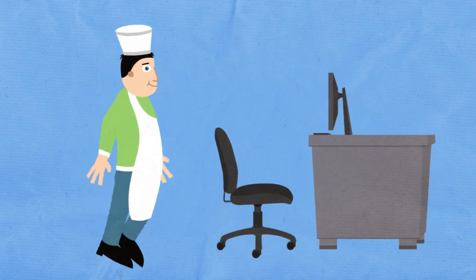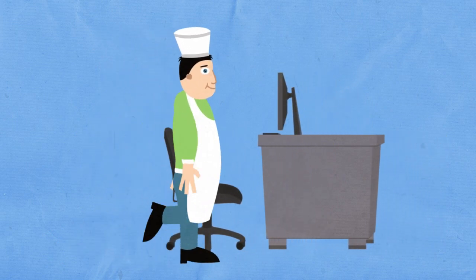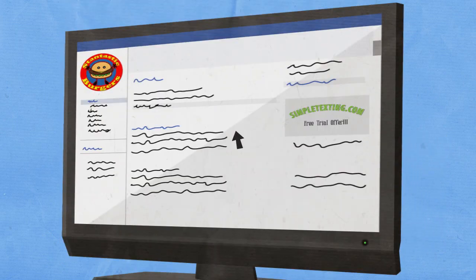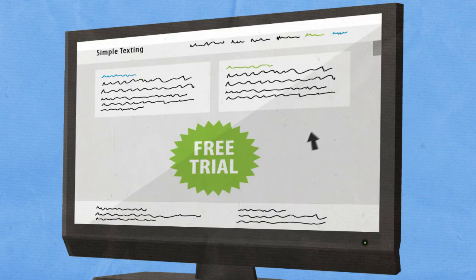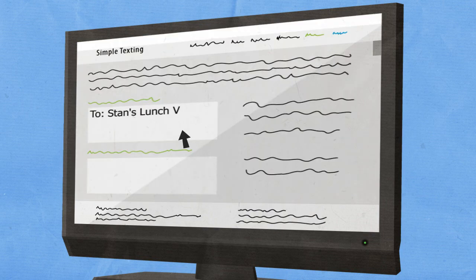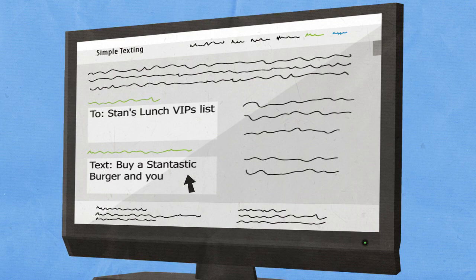So Stan discovered SimpleTexting and decided to try their free trial offer to help the Daily Diner grow its business. Stan followed the simple instructions at simpletexting.com and in just 15 minutes launched his first text message campaign to promote the Daily Diner and bring in brand new customers.